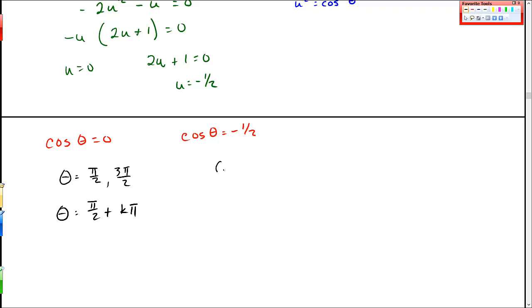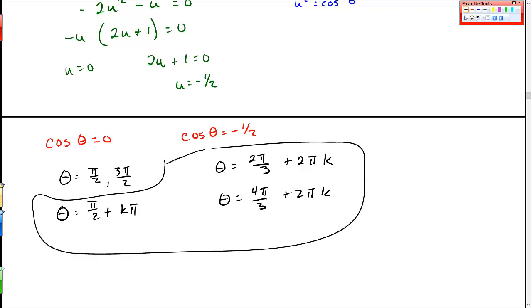And here, theta, where is cosine equal to negative 1 half? That should be at 2 pi over 3, and also at 4 pi over 3. And again, I get this plus 2 pi k, plus 2 pi k. So I think I can encompass the general solutions right here in those three solutions.